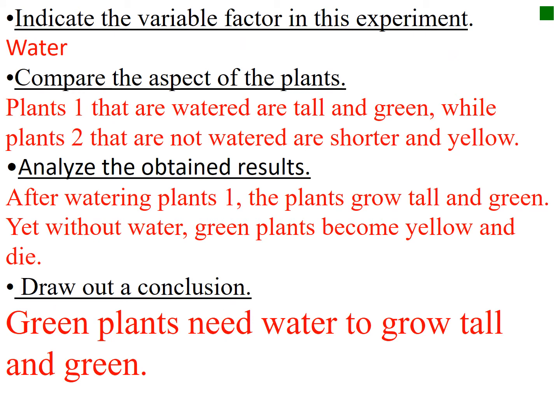Comparing the two plants: plant one, which is watered, grows tall and green, while plant two, which is not watered, is shorter and yellow. After watering, plants grow tall and green, yet without water, green plants become yellow and die. Conclusion: green plants need water to grow tall and green.